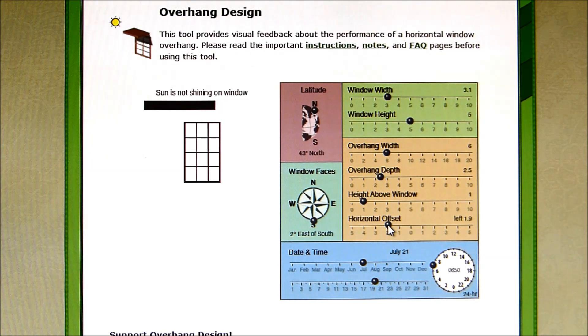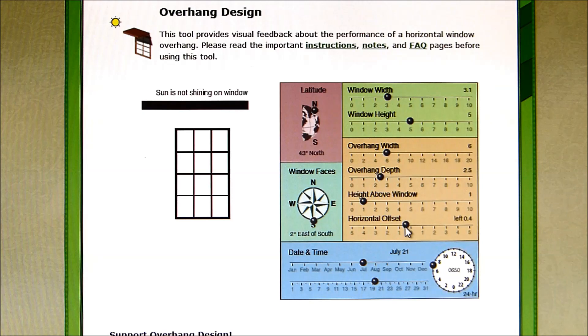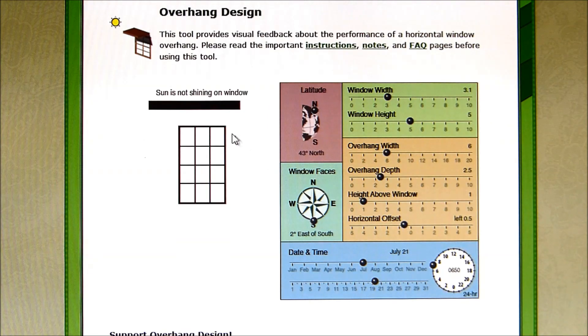We can change the horizontal offset just a little bit. It actually makes it easier to understand if you have the overhang width a little bit wider than the window and set the offset so that it's close to the center of the window.